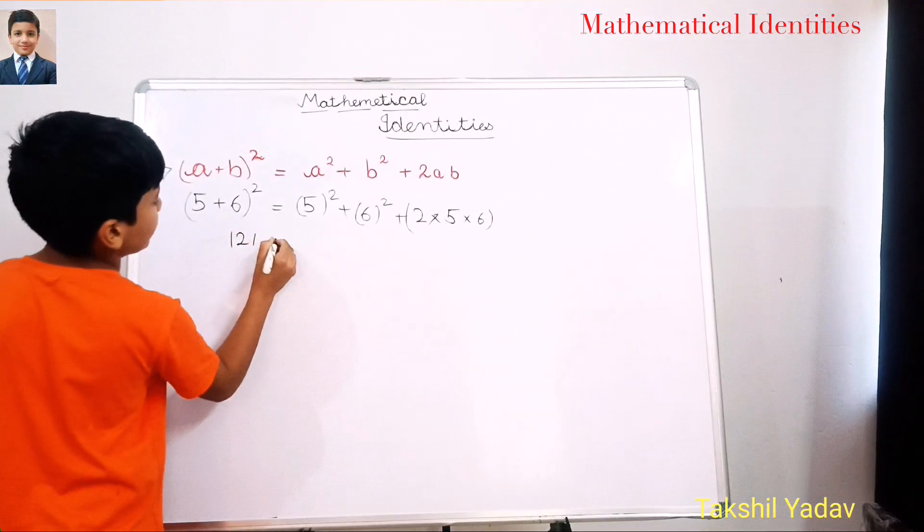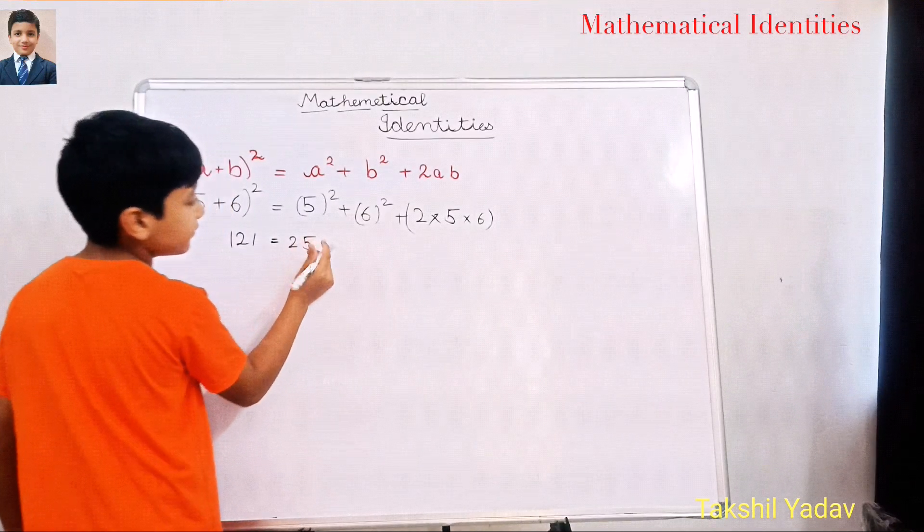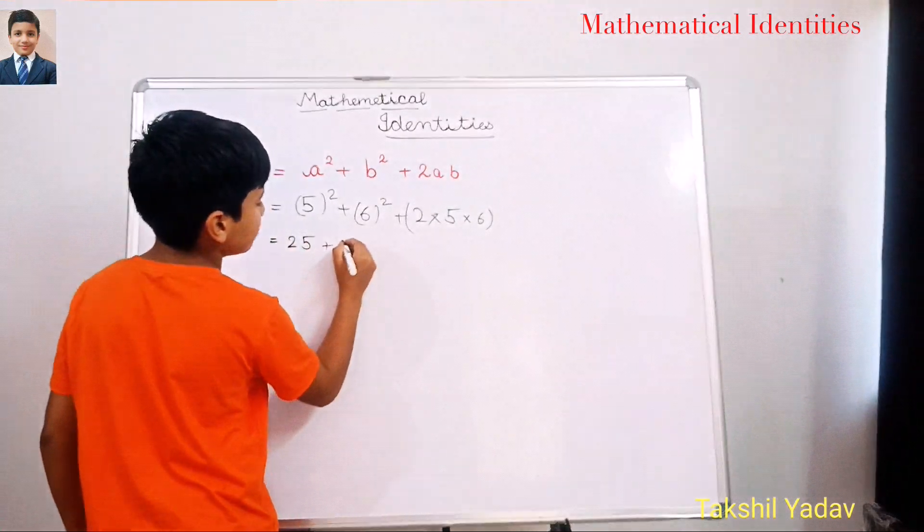Here we go. Okay, and here 5 square is equal to 25. Here 6 square is equal to 36.